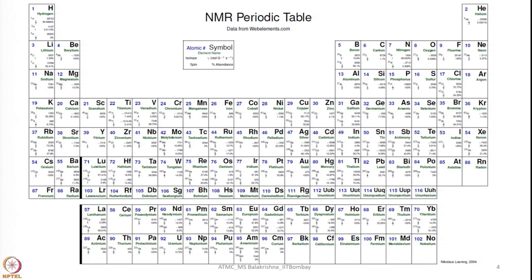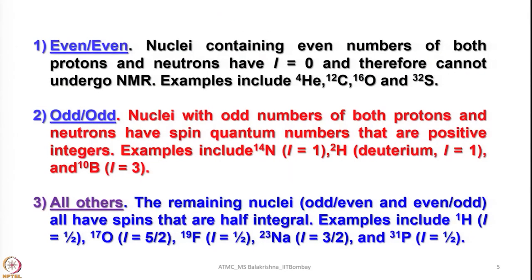Of course, they may vary — not all of them are 100%, some are 100%, some are in trace quantities, some are 20–30%. So what we have to understand first is which nuclei exhibit NMR. Nuclei containing even numbers of both protons and neutrons have nuclear spin i = 0 and therefore cannot undergo NMR. For example, 4He, 12C, 16O, or 32S.